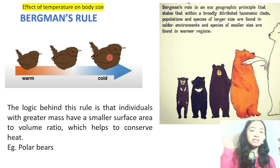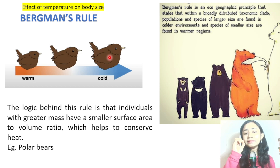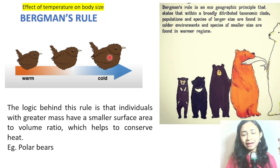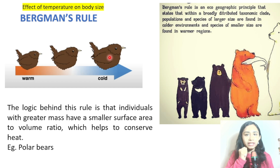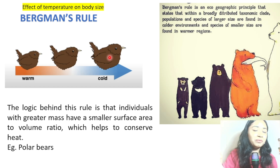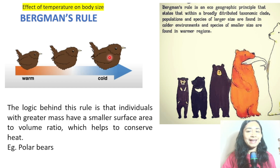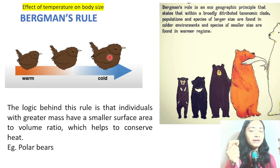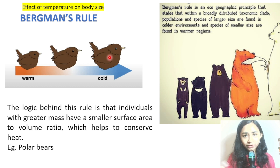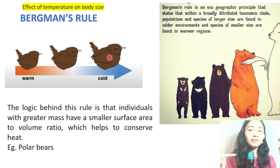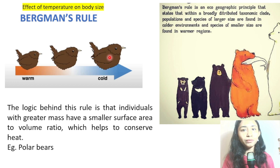The logic behind Bergman's Rule is that individuals with greater body mass have a smaller surface area to volume ratio, which helps to conserve heat. For example, polar bears are very large and their surface area to volume ratio is very small, which helps them conserve more heat and lose it very slowly.